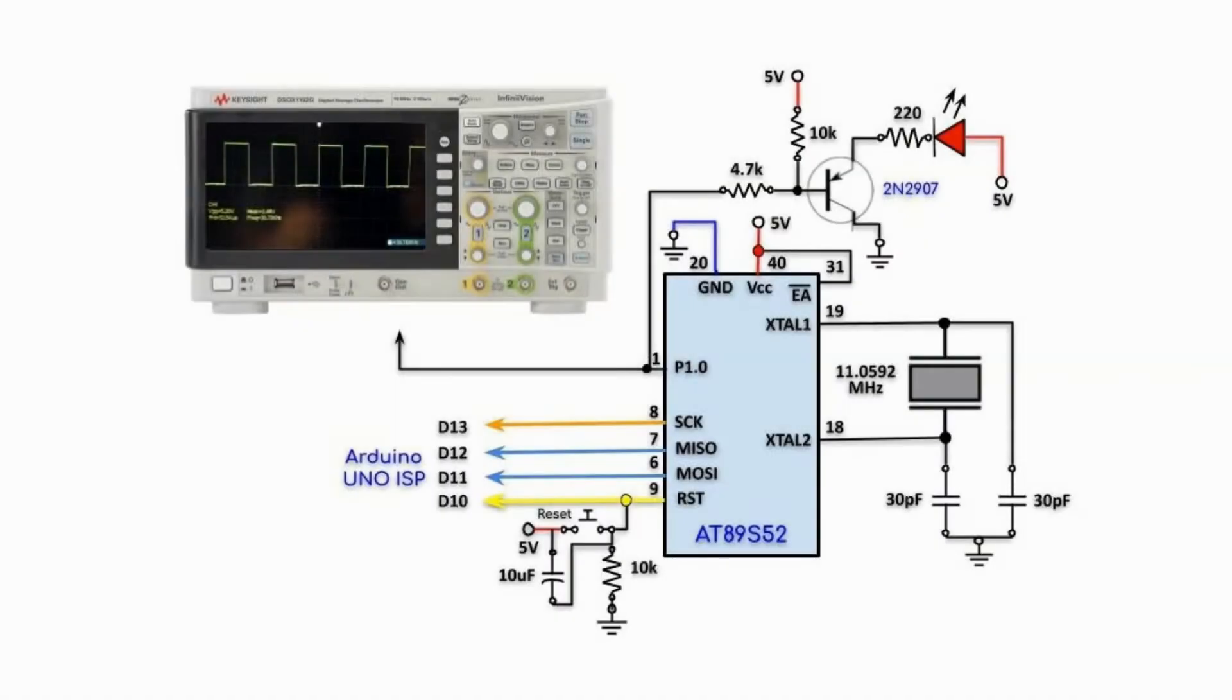This is the circuit diagram used to generate a 1 kHz square wave at the output of port P1.0 which is connected to a scope.